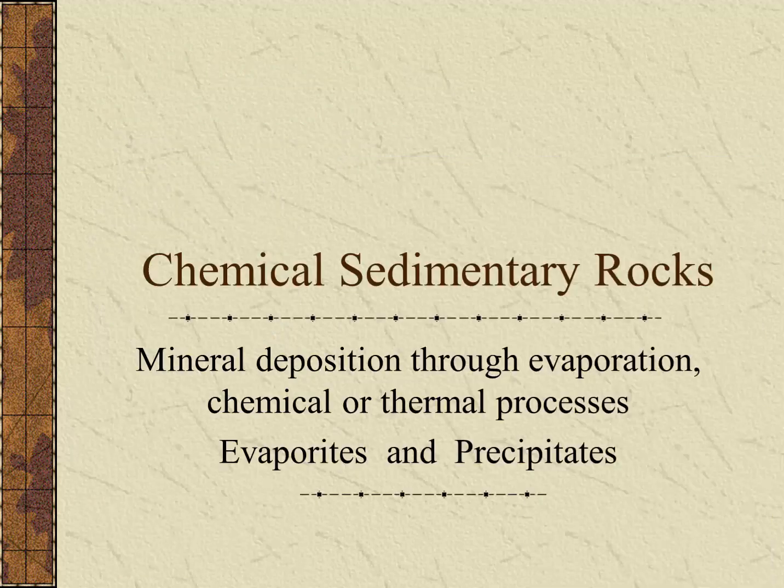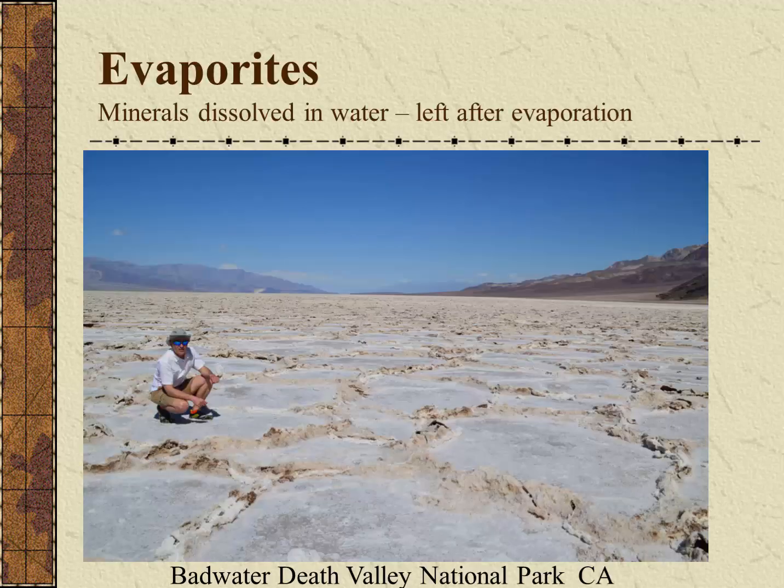Chemical sedimentary rocks occur when minerals deposit through either evaporation or other chemical and thermal processes. The two major types include evaporites and precipitates. Let's take a look at each.